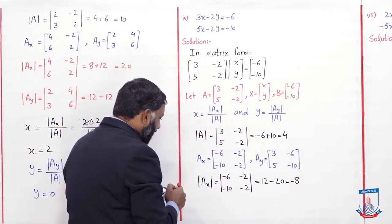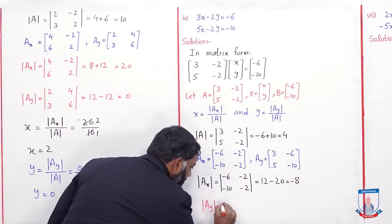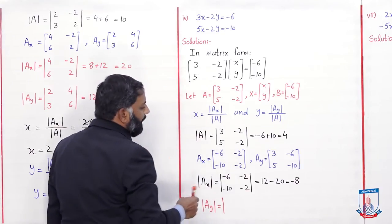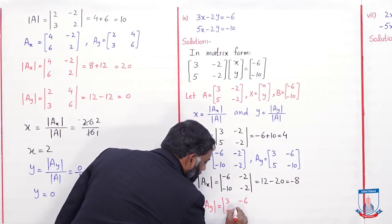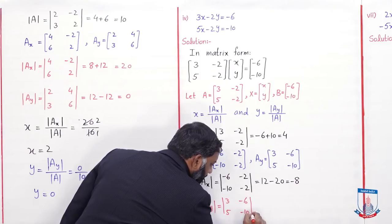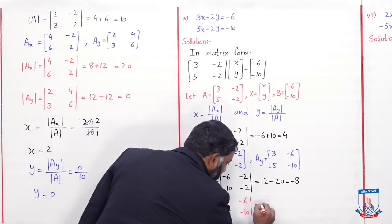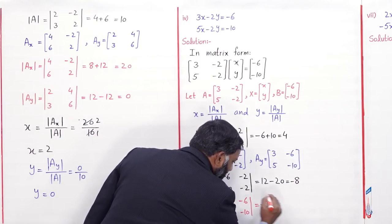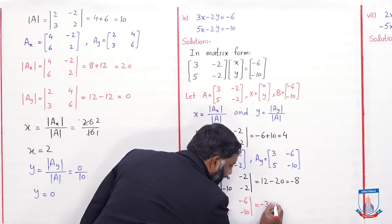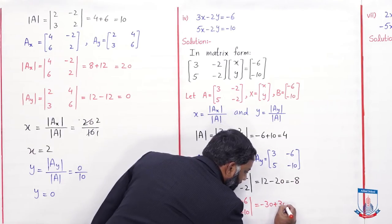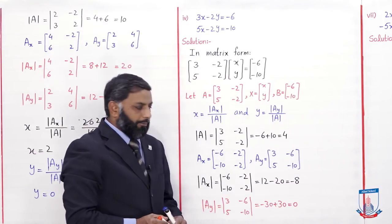Det(Ay) matrix [3, (-6); 5, (-10)]: diagonal entries ko multiply karein — result minus 30 aayega. Minus non-diagonal entries ko multiply karne se result minus 30 aaye, aur minus already yahan pe hai toh yeh plus 30 ho jaayega. Toh minus 30 plus 30 = 0. Det(Ay) = 0.